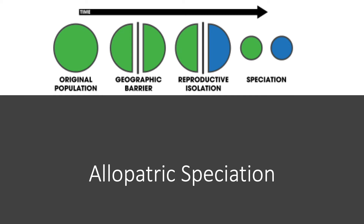Now, with time — we're at the third picture, the second from the right — reproductive isolation is what occurs next. These two groups have been isolated and are now reproducing on their own; they're not intermingling with one another. They are changing genetically as time progresses and their progeny are becoming different from one another. If you were to remove that geographic barrier, you would be dealing with two species if successful speciation has occurred.